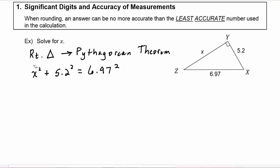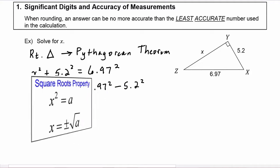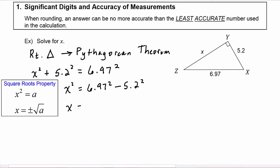Now we're trying to solve for x, so we'll subtract the 5.2 squared. I'm not going to do this intermediate calculation; I'm just going to leave it as 5.2 squared for right now. So the right hand side becomes 6.97 squared minus 5.2 squared. On the left hand side we have x squared, which means we're going to take the square root of both sides, and x is going to be the square root of 6.97 squared minus 5.2 squared.